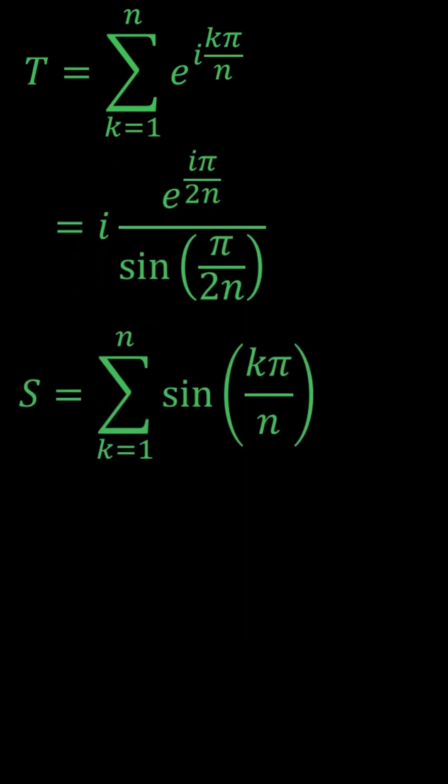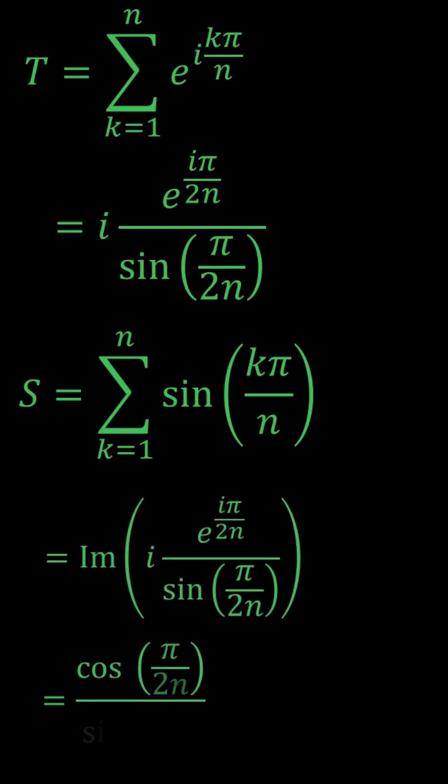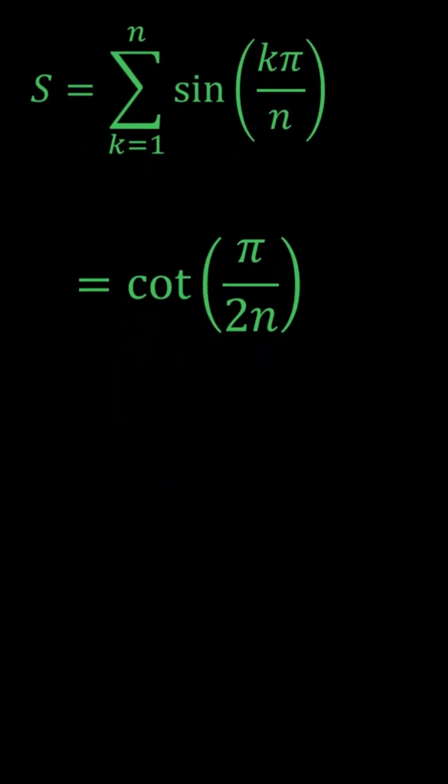Now we just take the imaginary part of this sum to get our target sum S. And that turns out to be cot(π/2n).